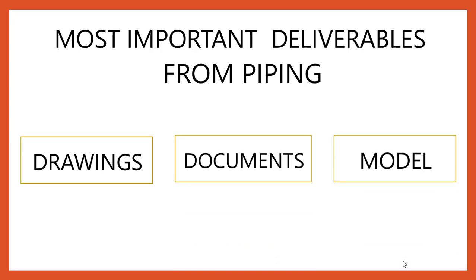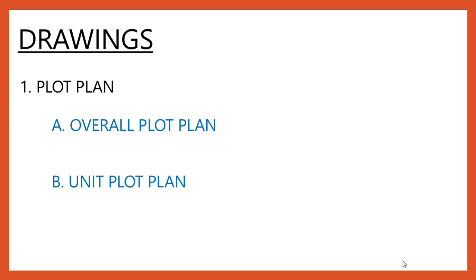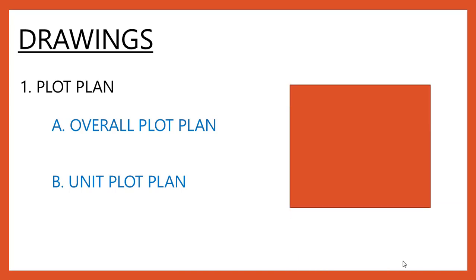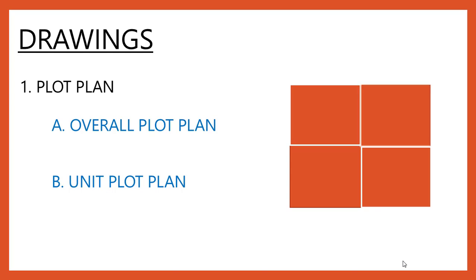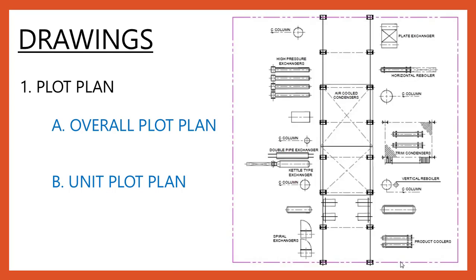Now let's see what are the most important deliverables issued from the piping discipline. These are classified into three types: drawings, documents, and model. Starting with drawings, the first important drawing submitted is the plot plan. There are two types: overall plot plan, which covers the entire plot area, and unit plot plan, which divides the overall plot into multiple segments. The plot plan shows the overall plant with equipment names, positions with respect to coordinates, and primary and secondary pipe racks.